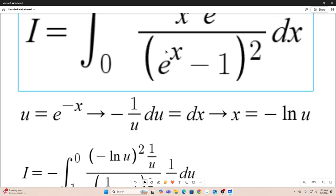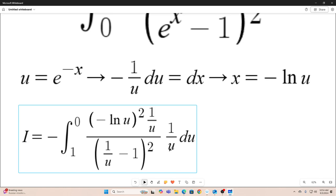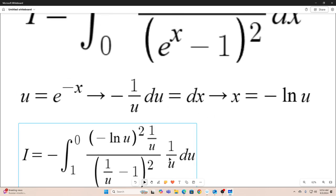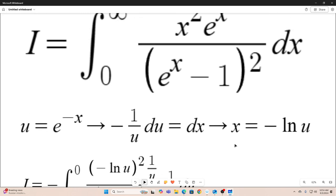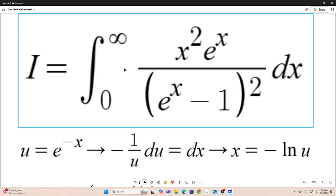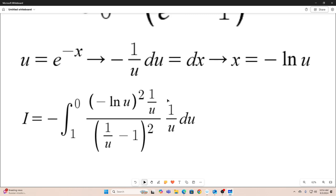And we replaced our e to the x with a 1 over u. We've got our negative 1 over u du. And if we let u equal e to the negative x, our bounds go from 1 to 0. So we have that. And then the next step is just simplifying that right there. And it simplifies to that.